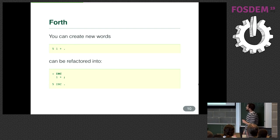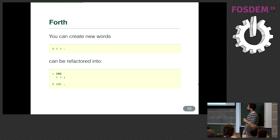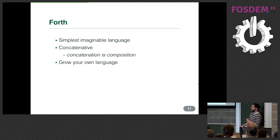For example: 5 is pushed to the stack, then 1 is pushed, then '+' pops two arguments and adds them, and '.' pops and prints the result. The interesting thing is you can take any subsequence of words and extract it into your own definition — we define 'increment' as '1 +'. This property — the ability to extract any subset of words into a definition — makes the language concatenative, and that's going to be very useful for reverse-engineering the ROM.